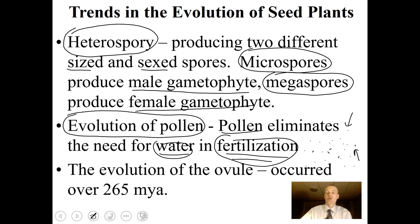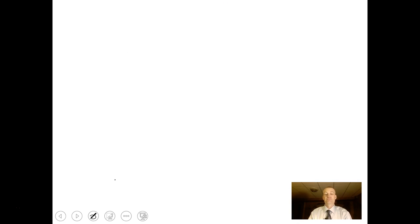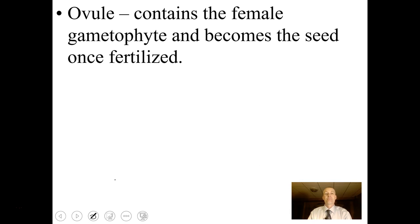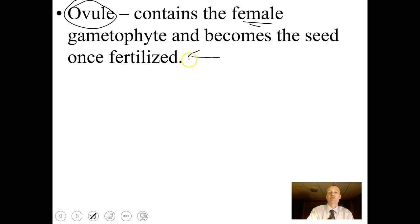Another evolutionary adaptation is the evolution of the ovule, which occurred 265 million years ago. The ovule is a structure that contains the egg that will be fertilized. It contains the female gametophyte, and it becomes the seed once the egg has been fertilized.